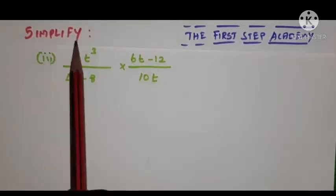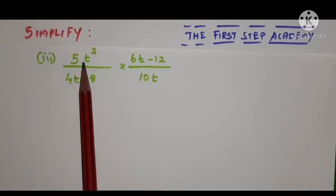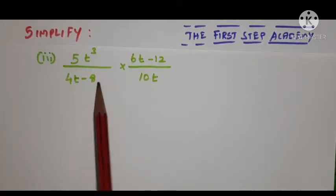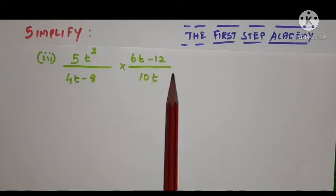So now the problem is: simplify 5t³/(4t - 8) × (6t - 12)/10t.